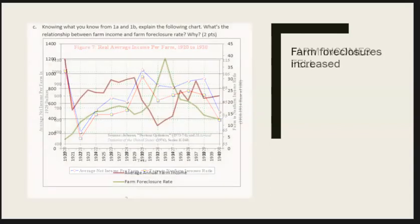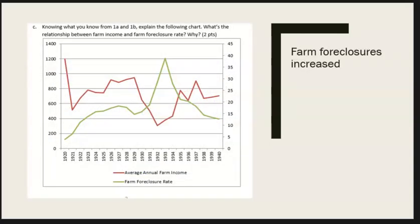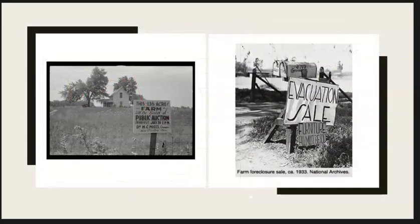As a result, farm foreclosures increased. Local banks began to foreclose on the farmers who had taken out loans against their property and for business expansion. The banks that catered to farmers were the first to begin to fail during the 1920s. These problems were early indicators that the prosperity of the 1920s was a false prosperity. People became both homeless and jobless with the loss of their farms.